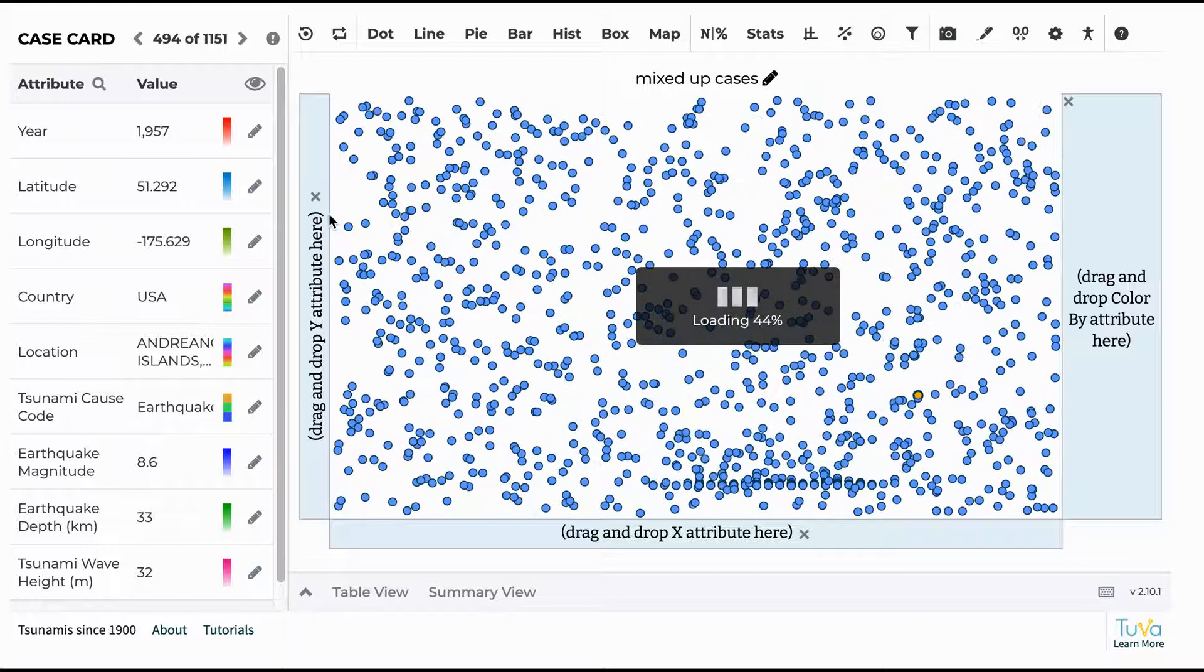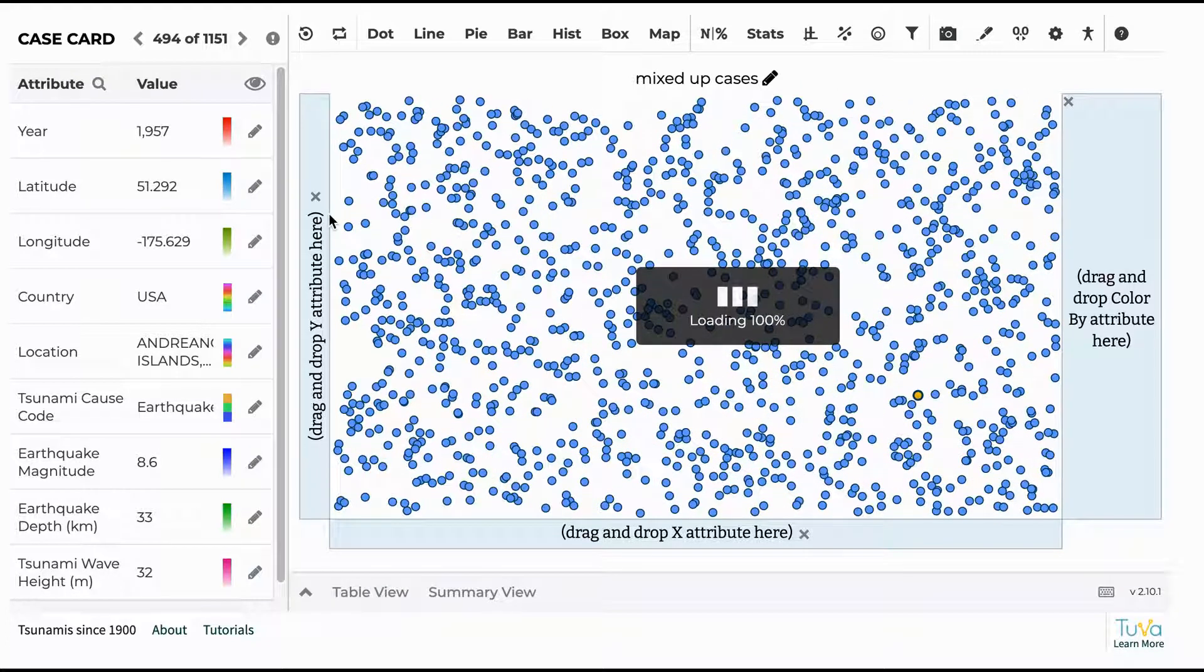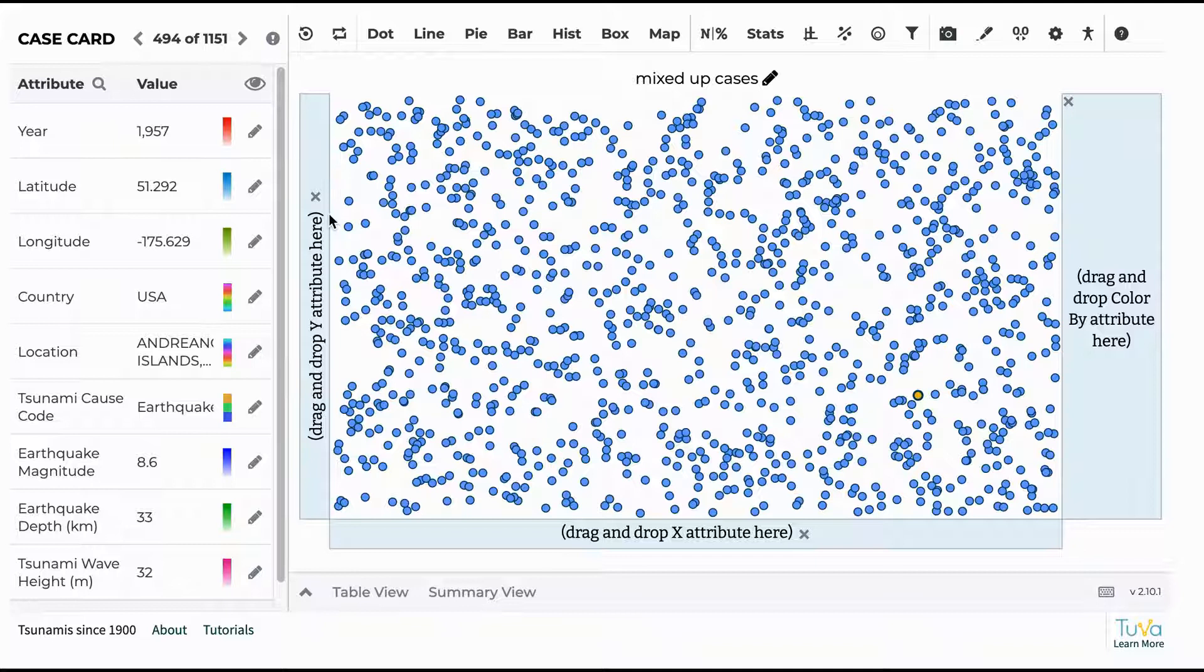So really, all you need to know for this activity is to drag the different variables on the side over to the X and Y axis.